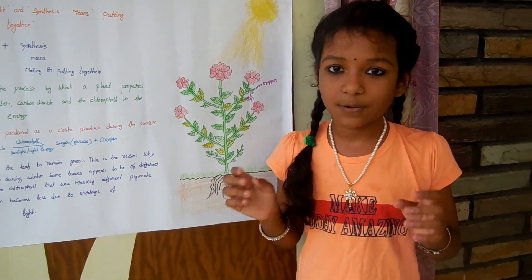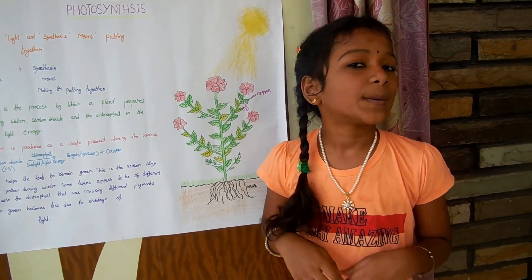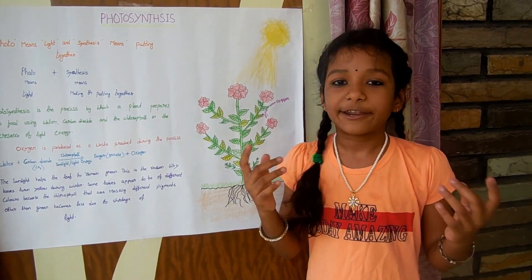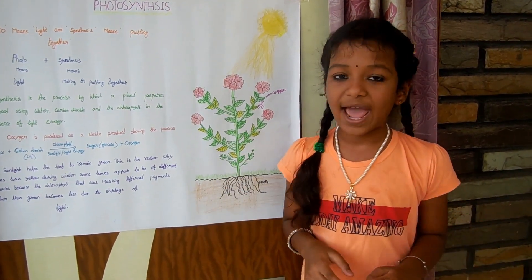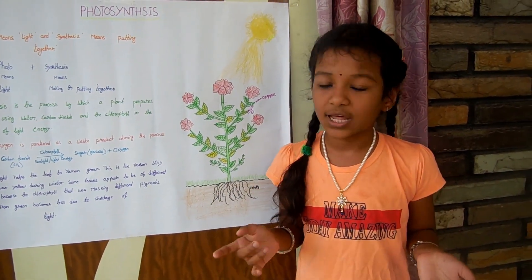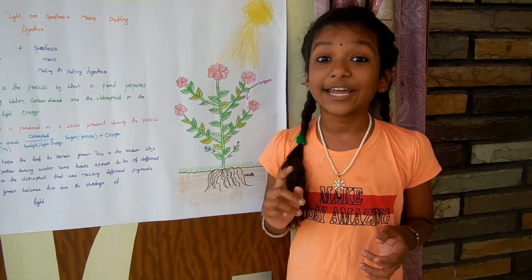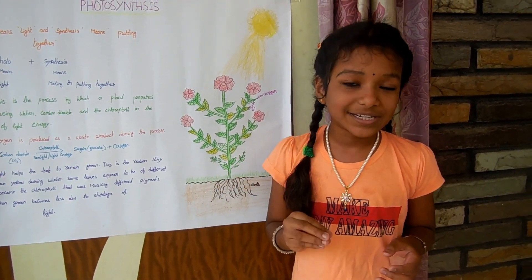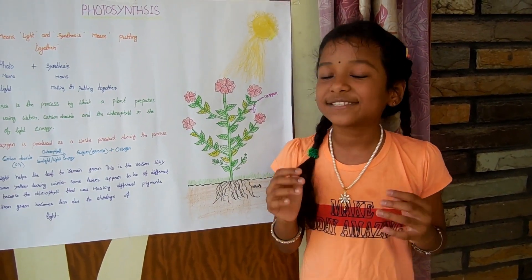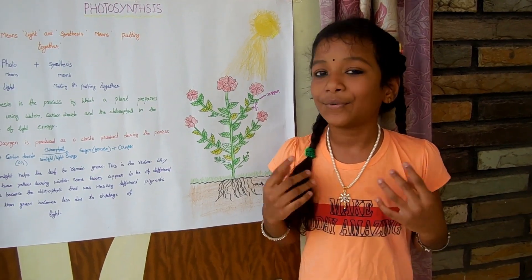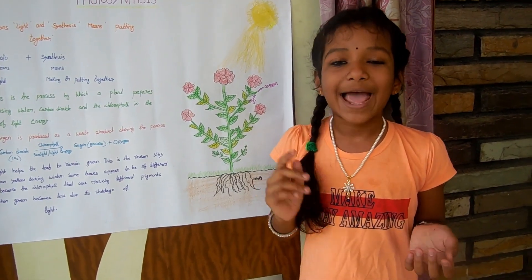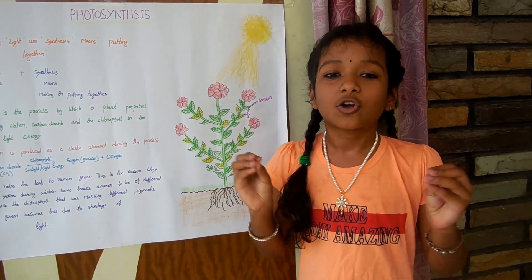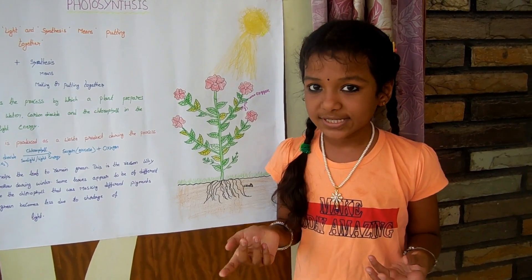All the living things require food. Humans and animals eat other animals or plants as food. But plants cannot eat like humans or animals. Plants make their own food. Plants obtain food by a process called photosynthesis.